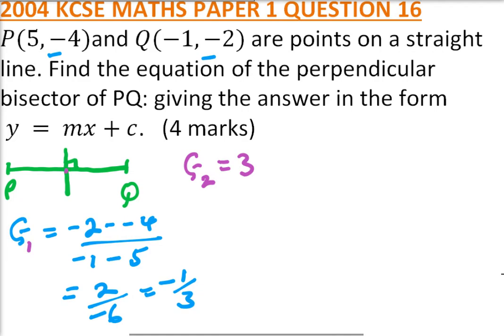Now another thing we need to know are the coordinates where the two lines cross each other, and that is the midpoint of PQ. If we call that point M, then the coordinates of M are (5 + (-1))/2 and (-4 + (-2))/2. This gives us the coordinates of M, which is (5 - 1)/2 = 4/2 = 2, and -6/2 = -3, so M is (2, -3).